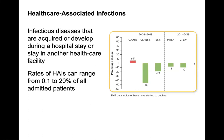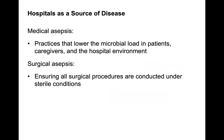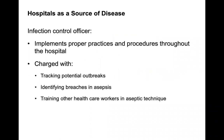Hospitals are a very large source of infections. Hospital-acquired infections can range from 0.1 to 20% of all admitted patients, with an average of about 5 to 7% of all admits developing some type of infection. Surgery carries a major risk for many types of infections. Most hospitals have infectious control officers who implement proper practices, track potential outbreaks, identify breaches in asepsis, and train healthcare workers in aseptic techniques.